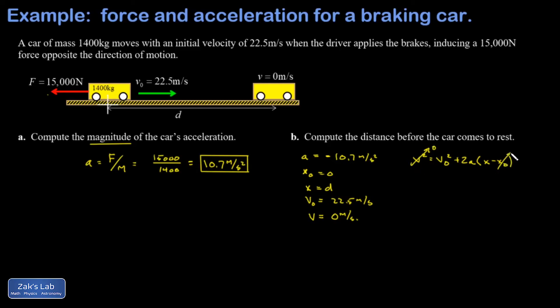My initial position was zero and my final position I'm going to call d. So let's rewrite this: 0 equals initial velocity squared, 22 and a half squared, plus 2 times the acceleration which has a minus sign